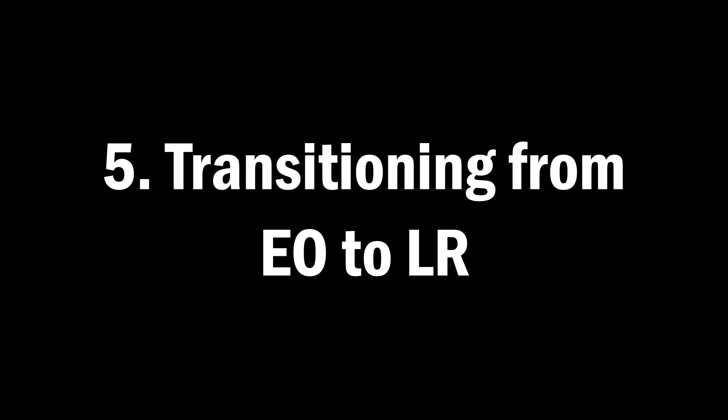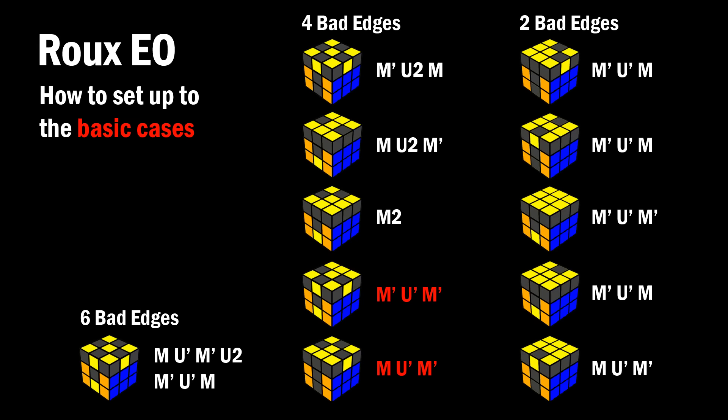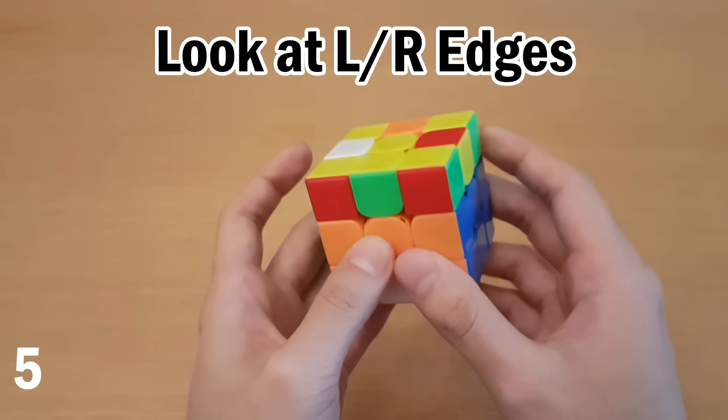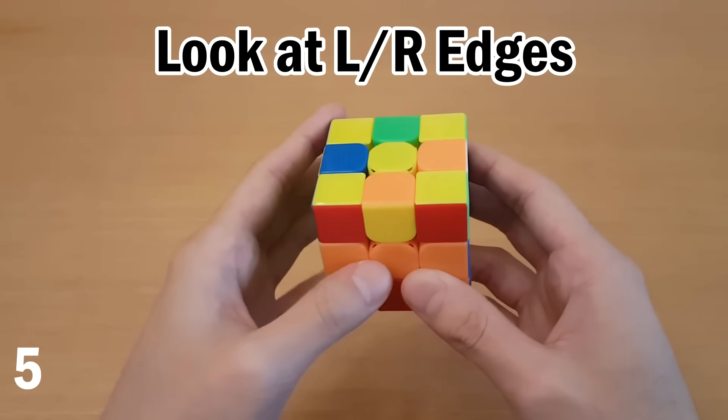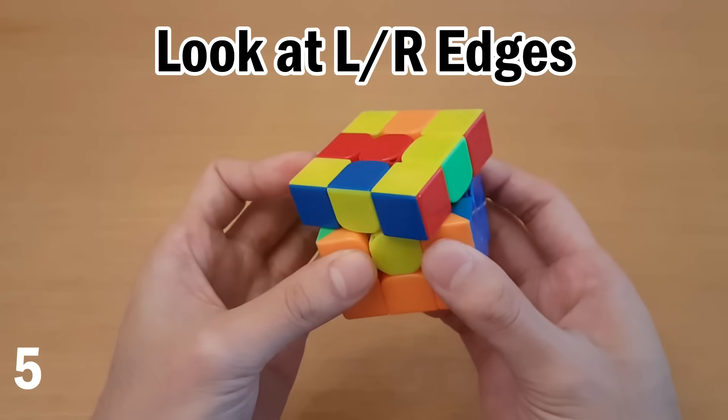Number five, transitioning from EO to LR. Once you know how to do all of the edge orientation cases, then make sure you look at the left and right edges as you do it. So for example, for this EO case, four bad edges on top, I'm just going to start doing it and watch the green and blue.